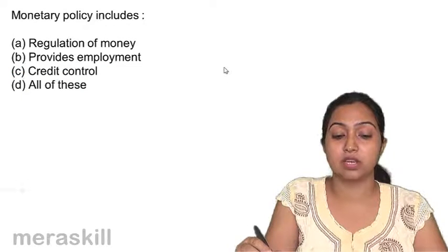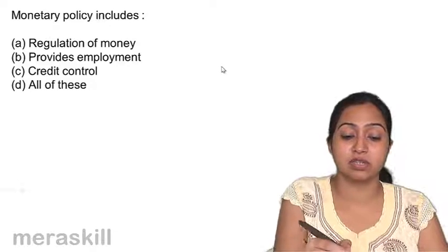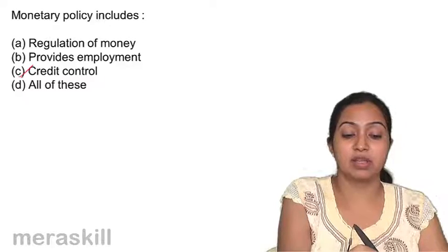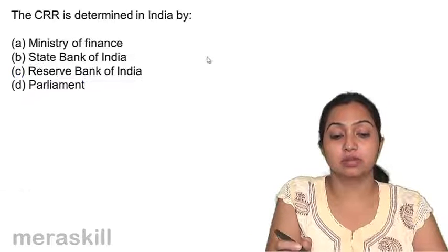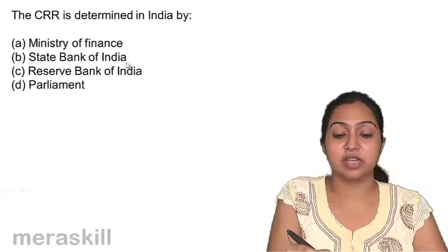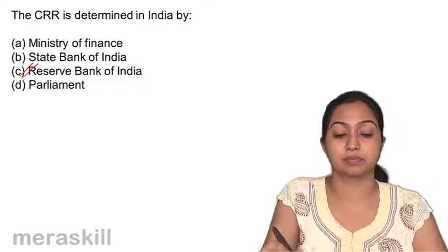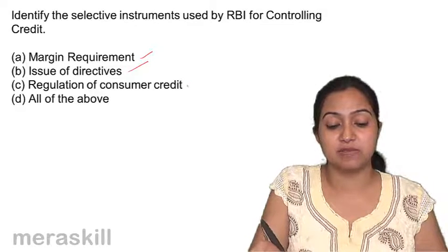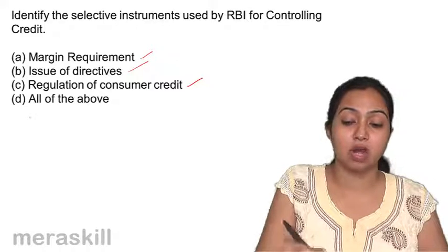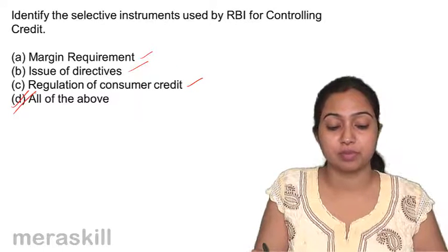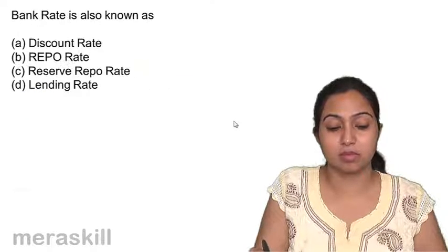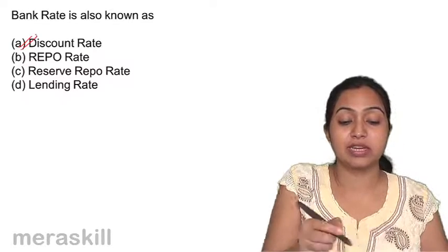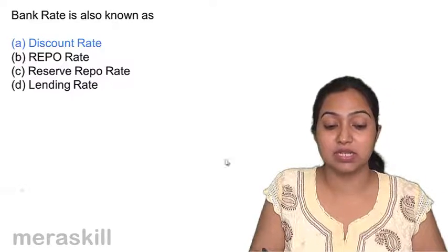Monetary policy includes regulation of money and credit control — it has nothing to do with employment generation. The CRR is determined by the Reserve Bank of India. The selective instruments include margin requirement, issue of directives, and regulation of consumer credit — all are selective measures. Bank rate is also known as the discount rate; it is the rate at which RBI discounts the bills of commercial banks.